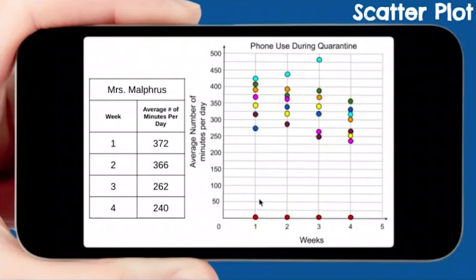Then you have Miss Malfris. See if you can guess what Miss Malfris is. Week one, we're going to go up to 372. Right there, that light pink. Week two, 366. Week three, 262. Week four, 240. So yes, that light pink is Miss Malfris.